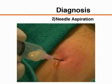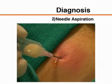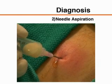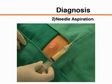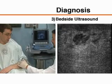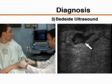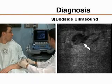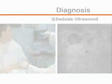Needle aspiration of a suspected skin abscess can assist the clinician in making the diagnosis of a localized abscess when results of physical examination are equivocal. Bedside ultrasound is a valuable adjunctive tool for identification of localized areas of fluid under the skin that may represent isolated areas of infection.